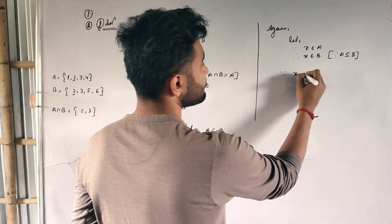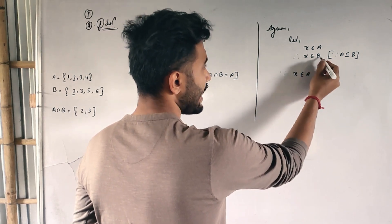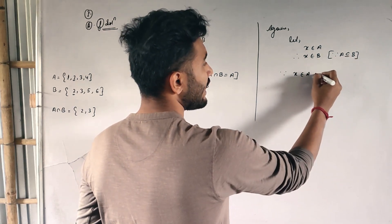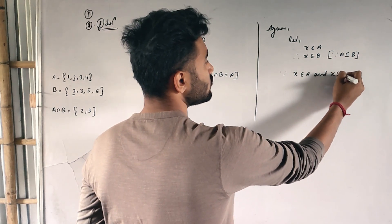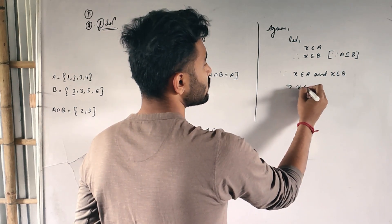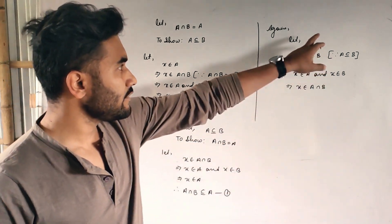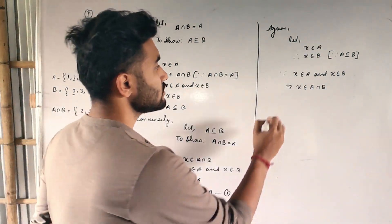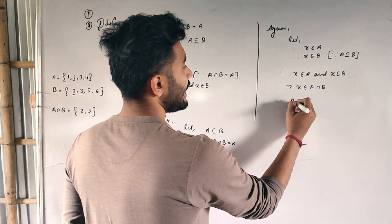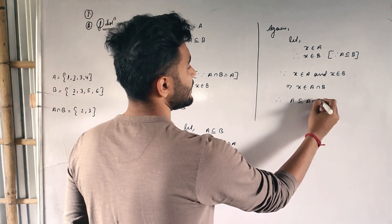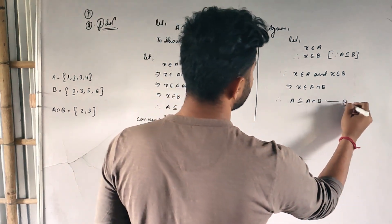Since X belongs to A and because of this given, and X belongs to B, so implies X belongs to A intersection B. I have started with A and I have finished in B.